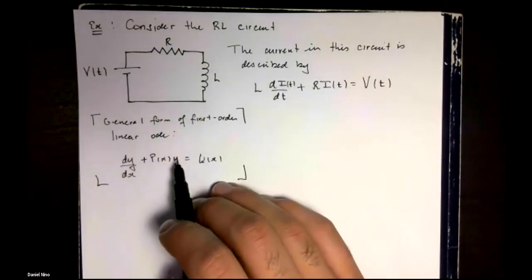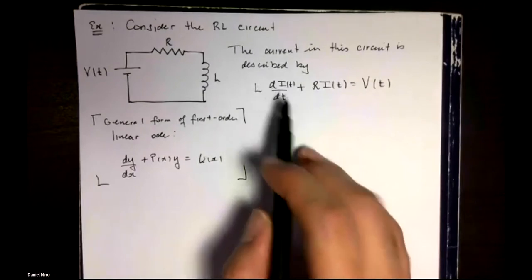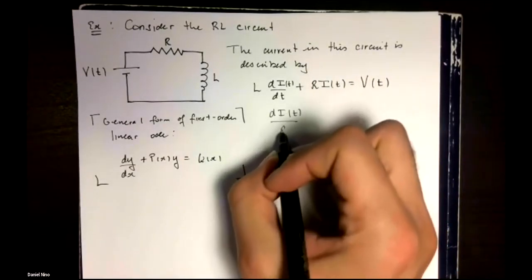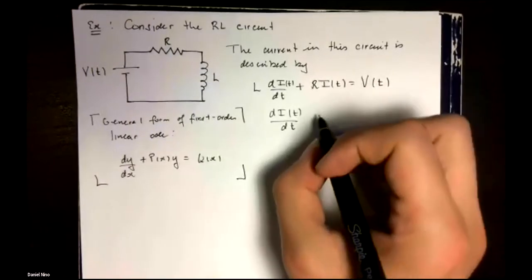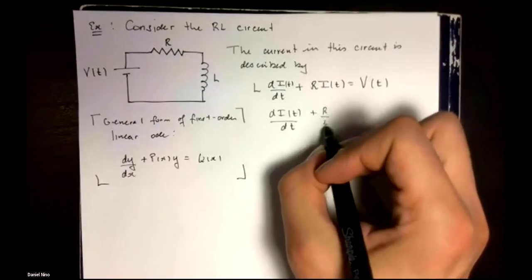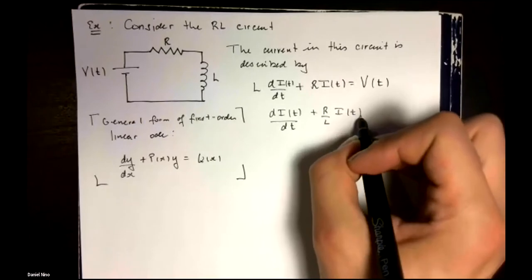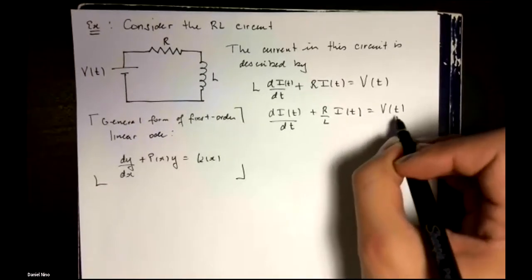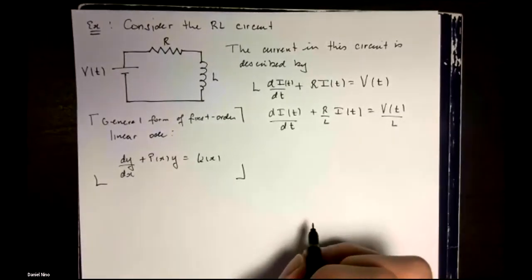So we want to put this in exactly this form. So we need to get rid of this L. And we do that by dividing both sides by L to get this.